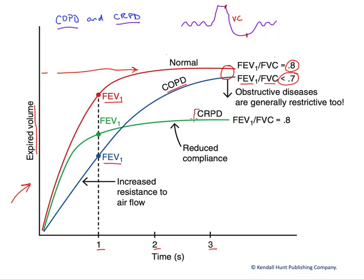Finally, in our CRPD person who has fibrosis and scarring of the lung, they have reduced compliance. Compliance equals the change in lung volume over a change in pressure — in other words, the driving pressure for air movement. If compliance is large, it means we get good air movement, a large change in volume for a very small change in pressure — in other words, the lung is very distensible.